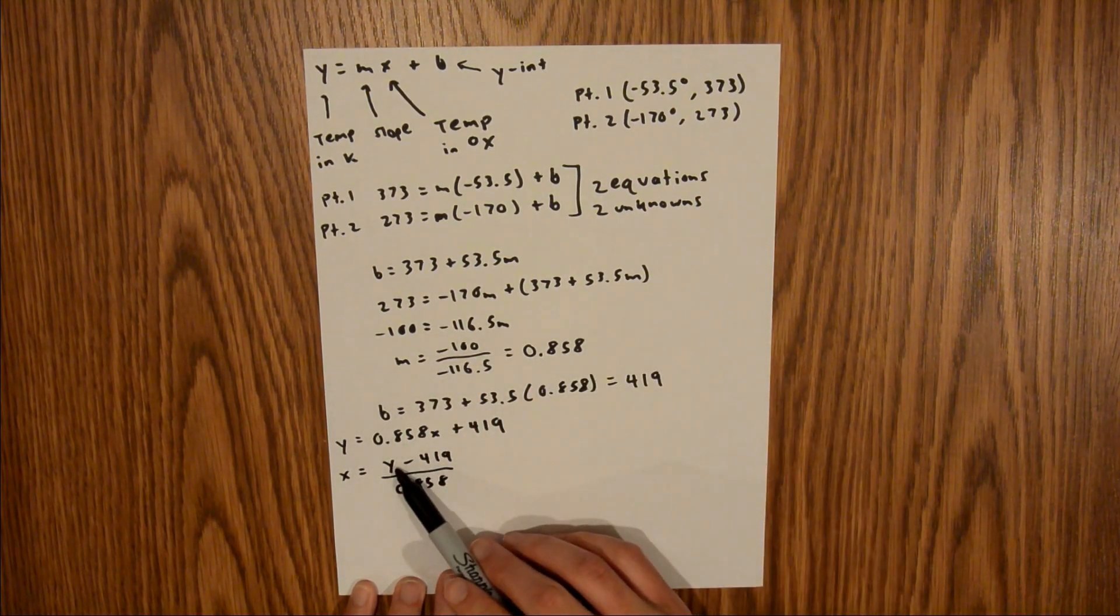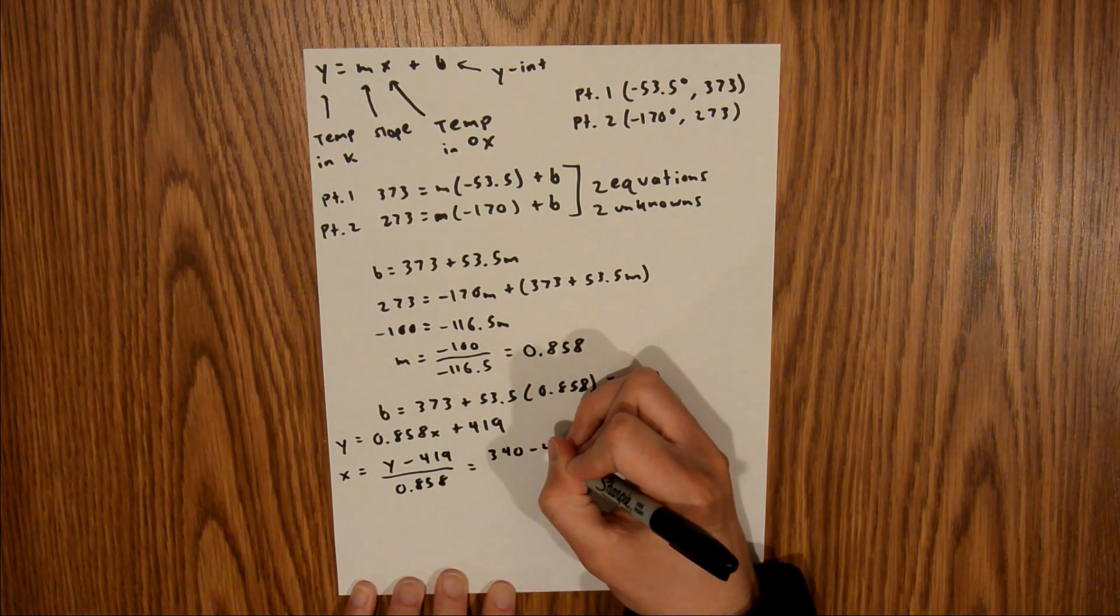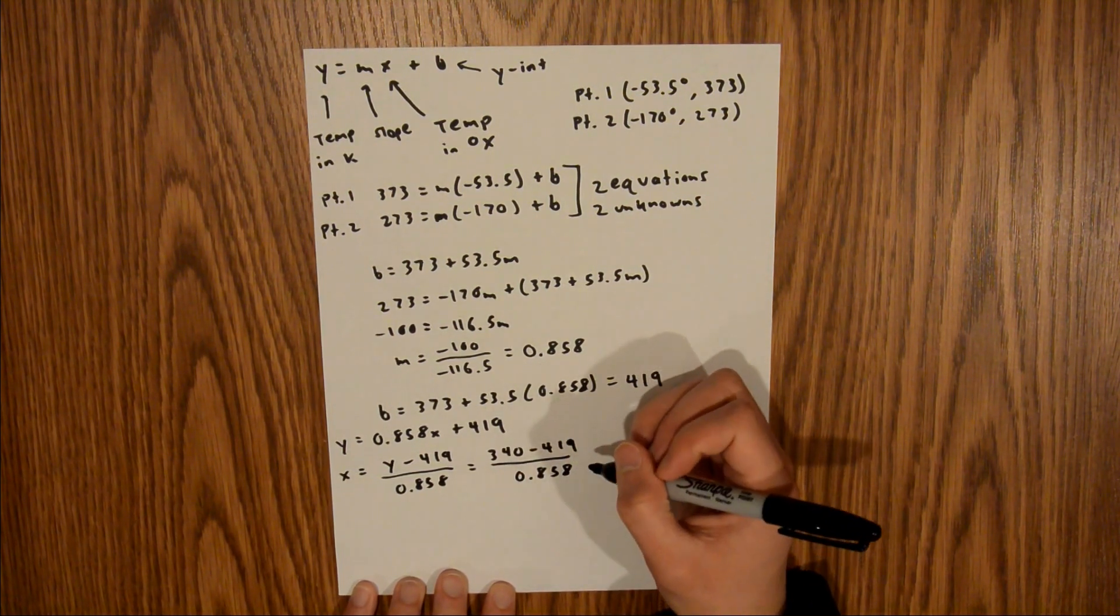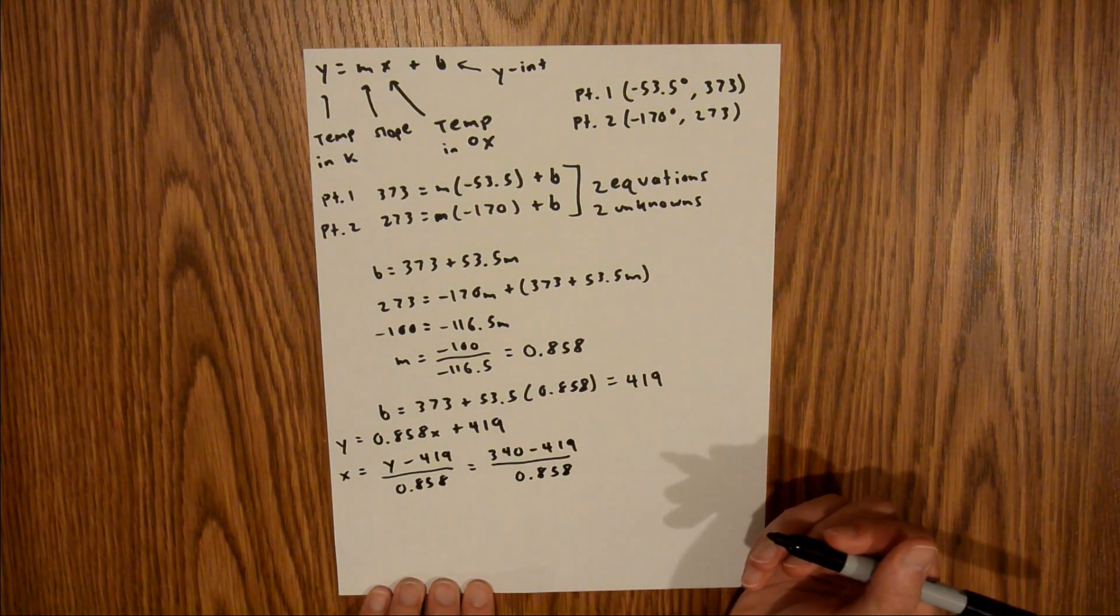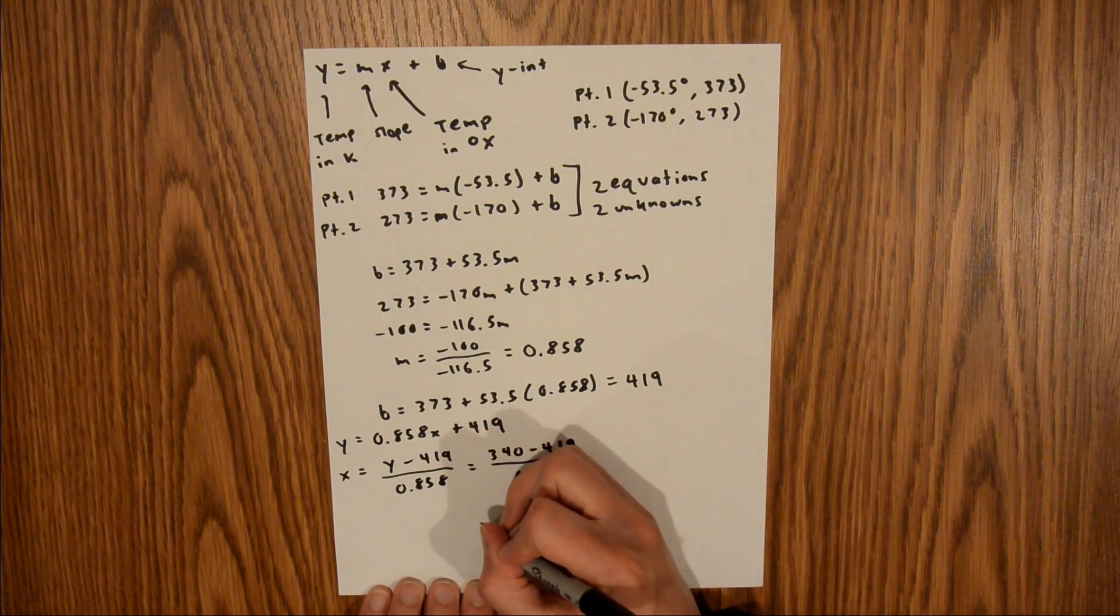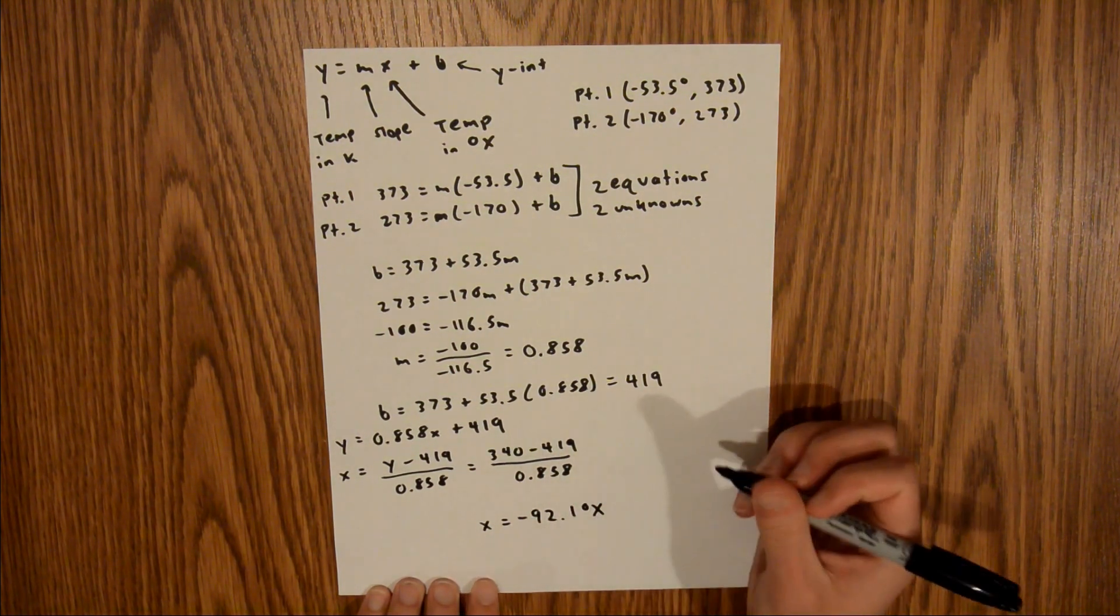And now, if we plug in our value of 340K. If you plug that into your calculator, you should find that our value for 340K in degrees x is negative 92.1 degrees x.